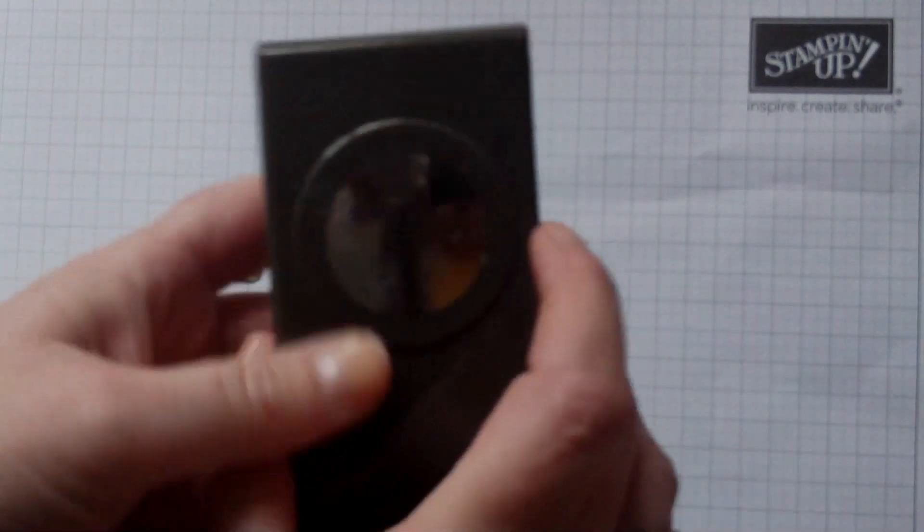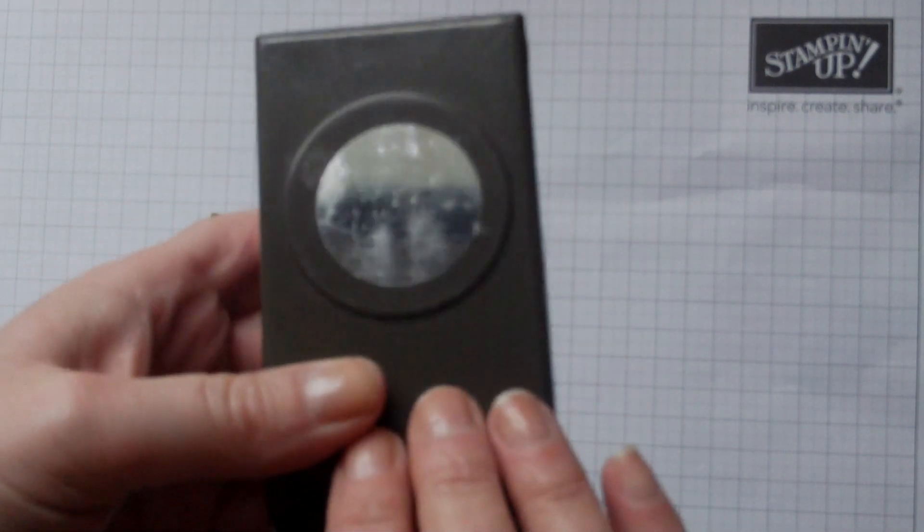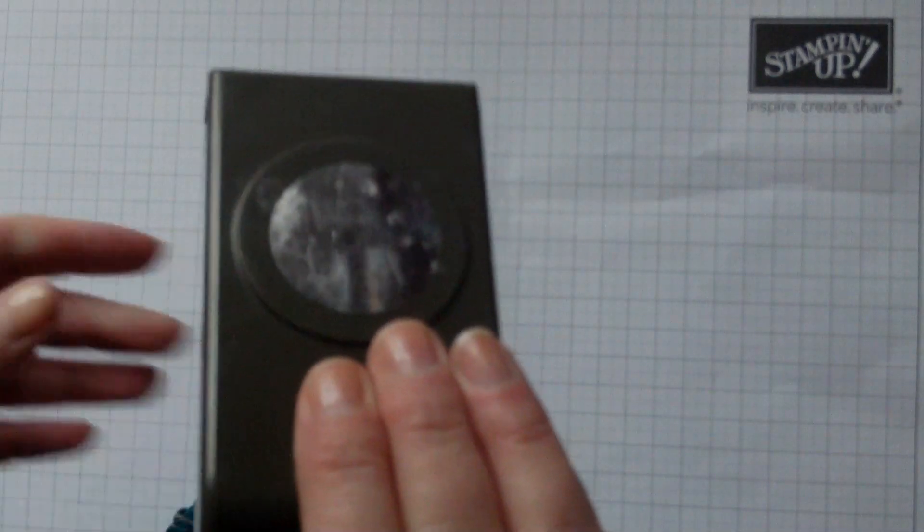So first of all, you'll need a circle punch. Obviously the larger the circle punch you use, the bigger the leaves. I'm going to be using this 1 3 8 of an inch circle punch.